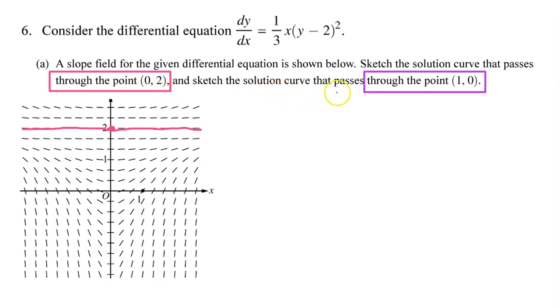To sketch the solution curve that passes through the point, all we have to do is trace the path of slope lines that passes through this point. And it seems to go something like this. Then it continues on like a mirror image to the left. Just make sure you draw your solutions all the way to the edges of the slope field.